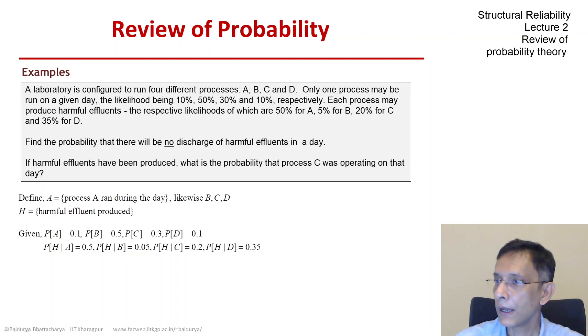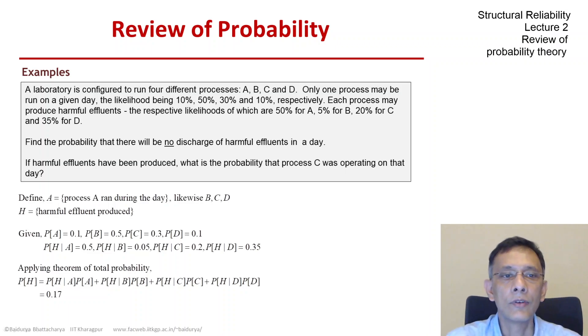So now we can apply the theorem of total probability and find the unconditional probability of H and that turns out to be 0.17 once you do the arithmetic and what's been asked for is there will be no discharge so P of H bar which is 0.83.